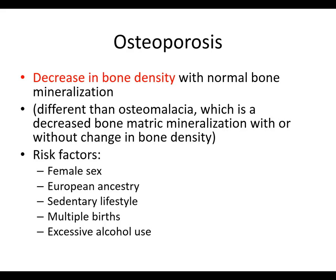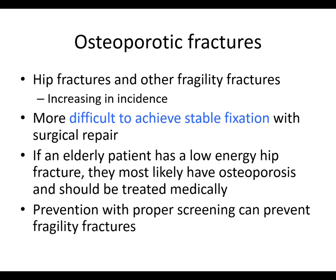Osteoporosis is when you have a decrease in bone density with normal bone mineralization — it's just overall thin bones. It's different from osteomalacia, like vitamin D deficiency, which involves decreased bone matrix mineralization with or without a change in bone density. There are multiple risk factors. Osteoporotic fractures include hip fractures and other fragility fractures; they're increasing in incidence. It's more difficult to achieve stable fixation with surgical repair because the bone is thinner and screws don't hold as well. There's been a whole wave in technology with locking plates and advanced fixation devices to get better repairs in osteoporotic patients.